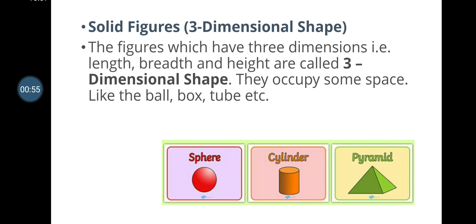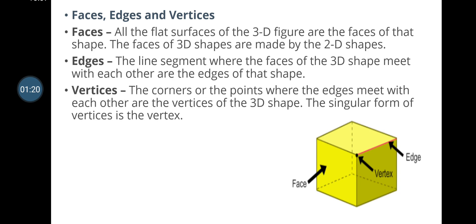Three-dimensional shapes, also called solid figures, are figures which have three dimensions — that is length, breadth, and height. They occupy some space. Examples include a ball, box, and tube. These shapes have not only length and breadth but also height.